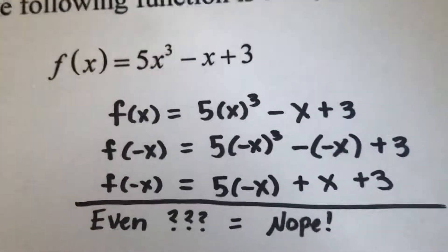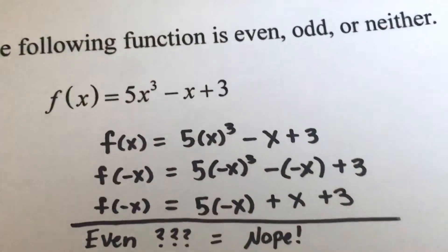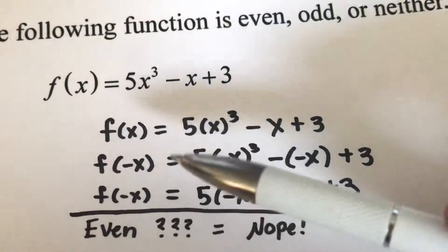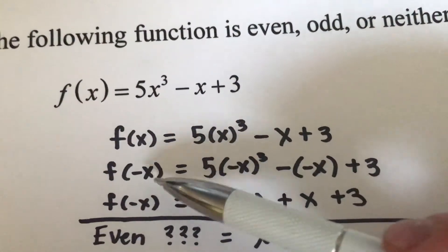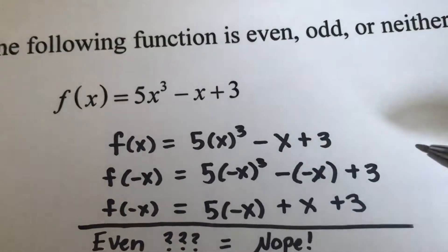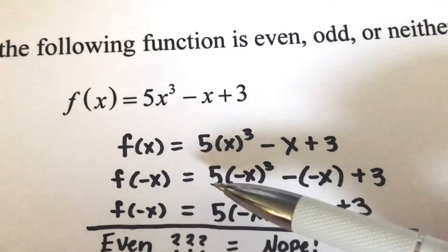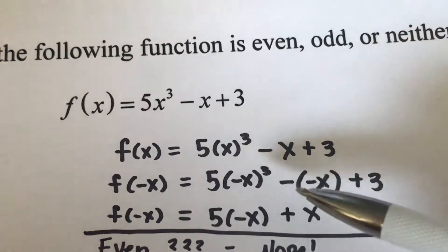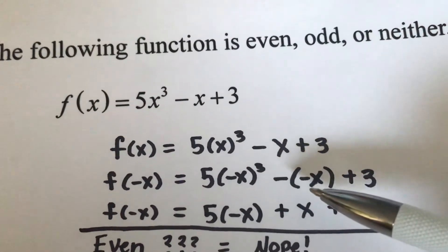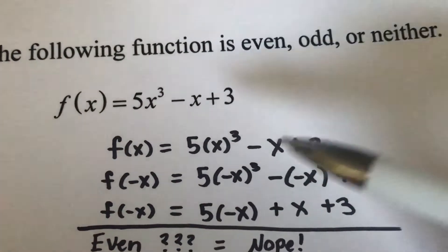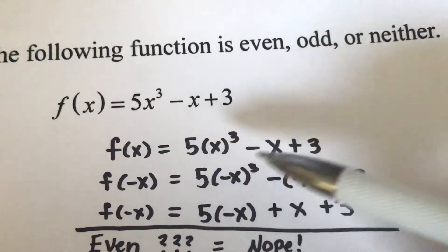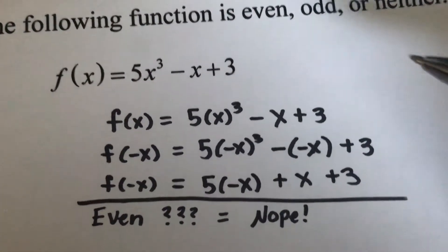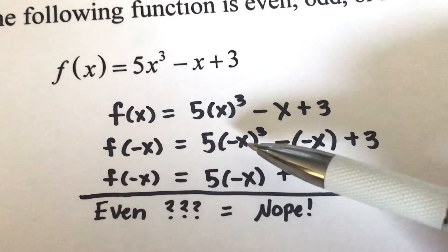And so as you can see here when it's f of negative x, we're going to make all of our x's negative in the equation. So we've got 5 of negative x cubed minus negative x plus 3, and if we distribute into each of these things, we'll see what that equation gives us.